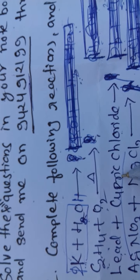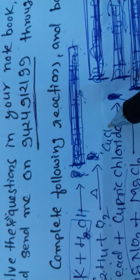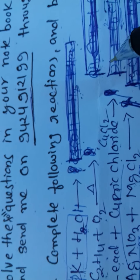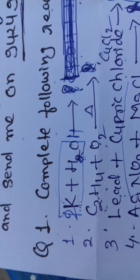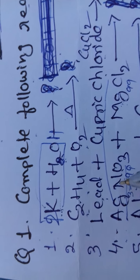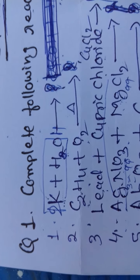Third reaction: lead reacting with cupric chloride. The cupric chloride CuCl2 is cupric chloride reacting with lead. What product form? This is for you. Next, fourth reaction is lead silver nitrate reacting with magnesium chloride. Both are in aqua solution. And what will form?